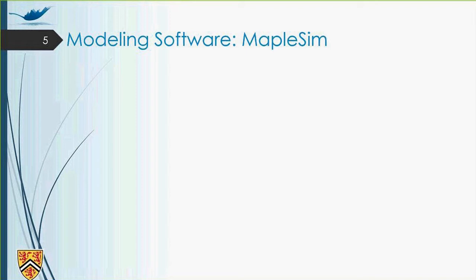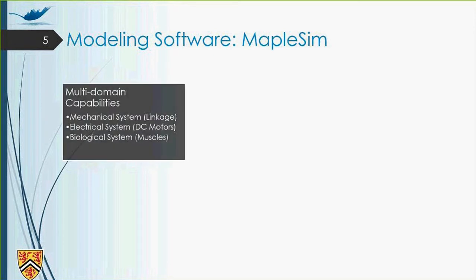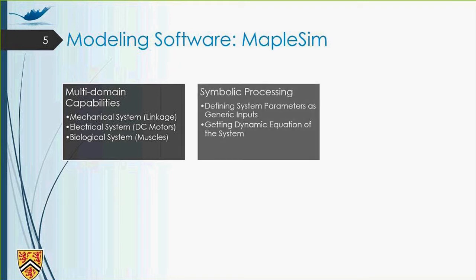We need a software with specific properties. For this reason, we chose MapleSim because of the following reasonings. It has multi-domain capabilities. We can model the robot or human linkage as a mechanical system. We can model the robot DC motors as the electrical system. We can model human muscles as a biological system. The other thing is the symbolic processing of MapleSim. We can define any system with generic parameters and change the parameters for the system easily. And then we can get the dynamic equations of the system in terms of parameters.